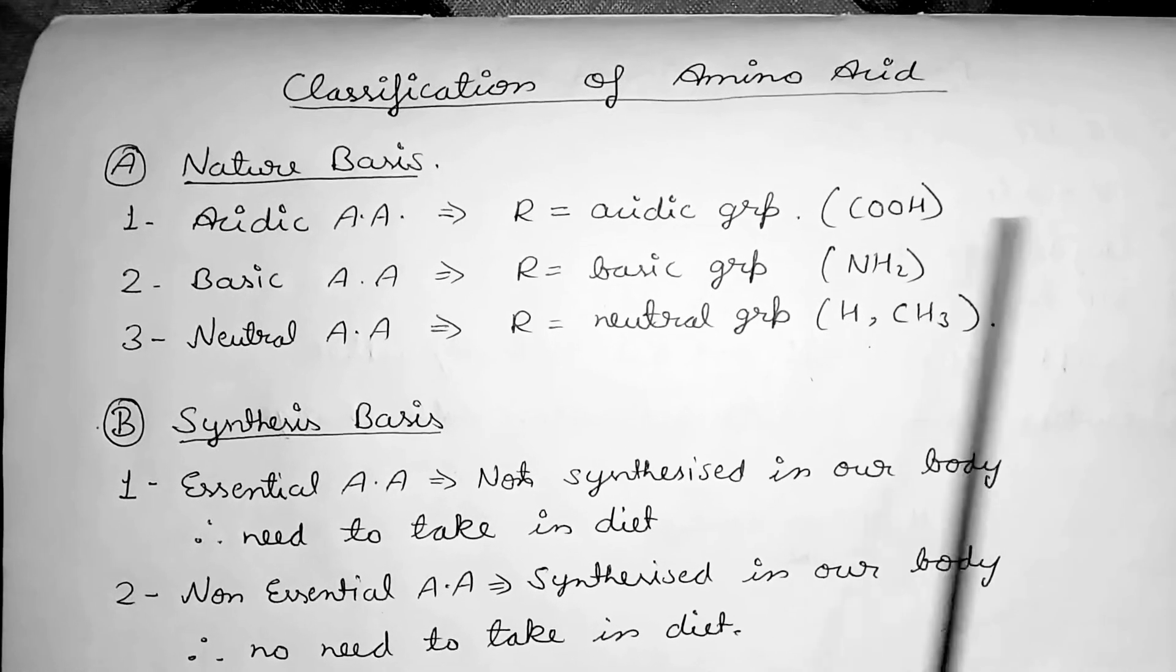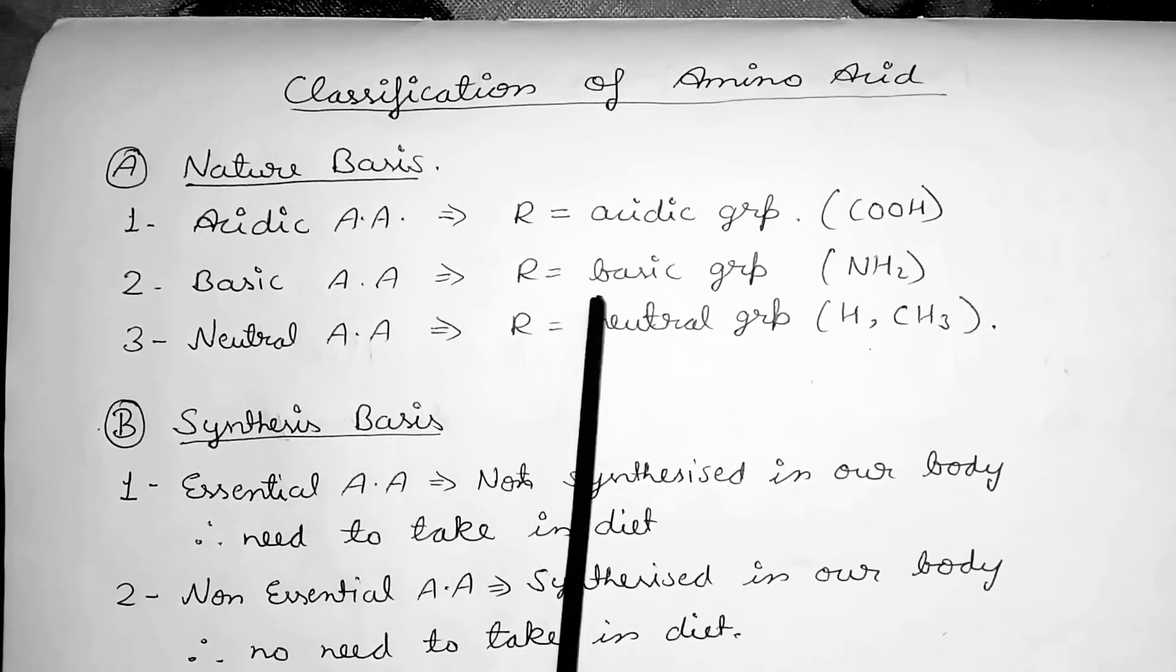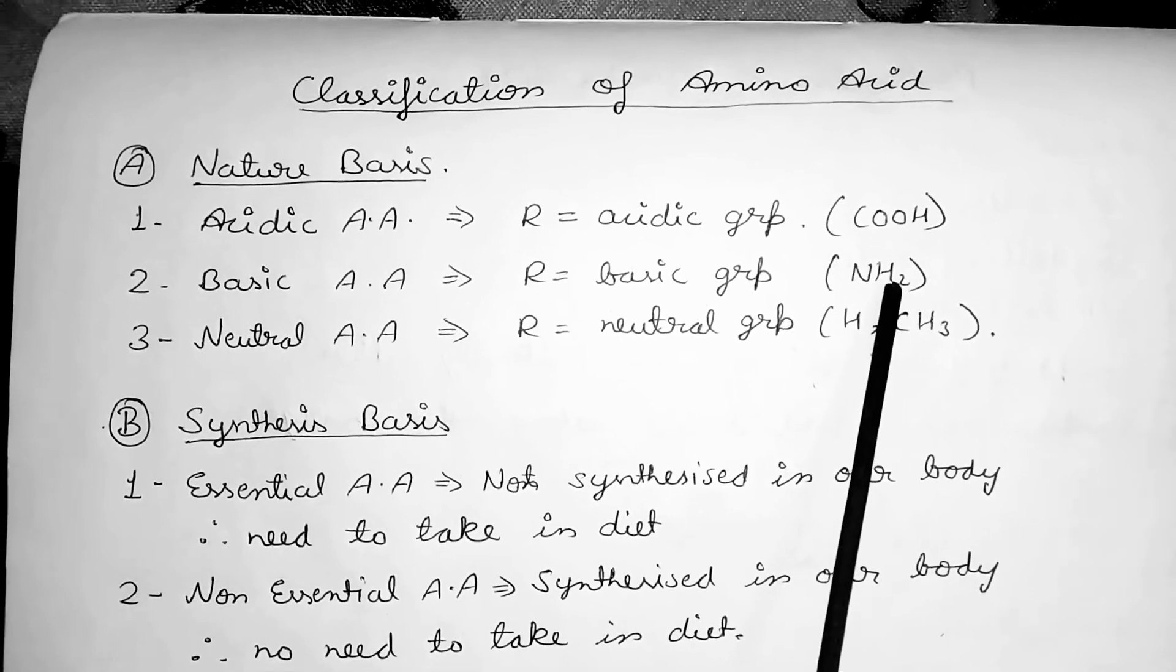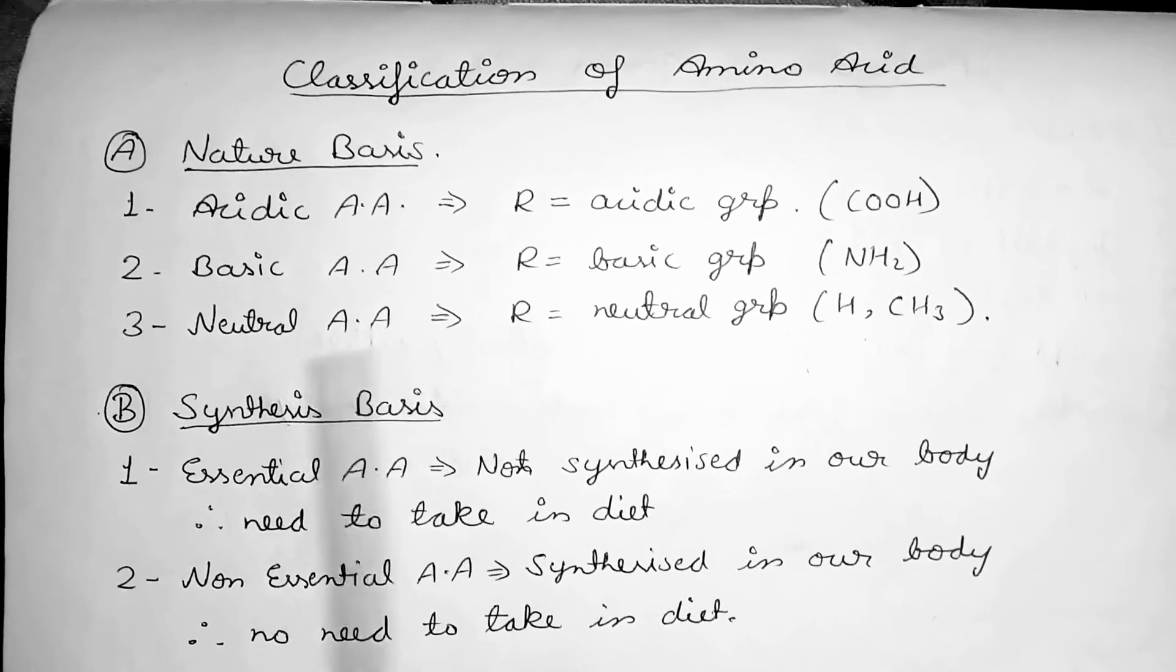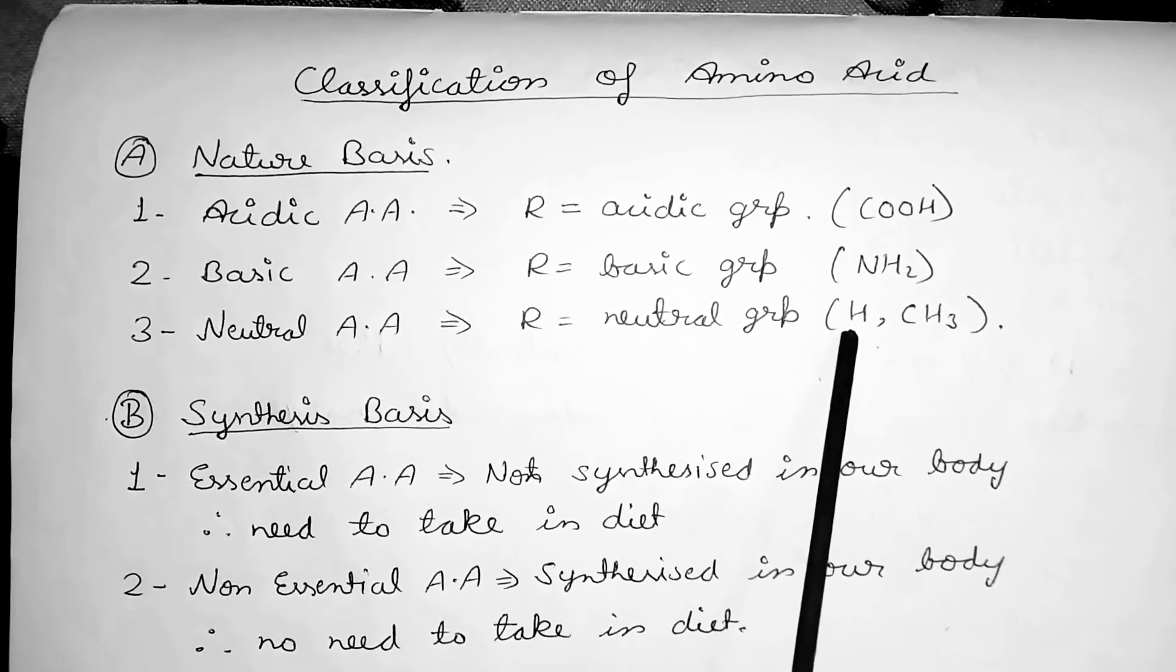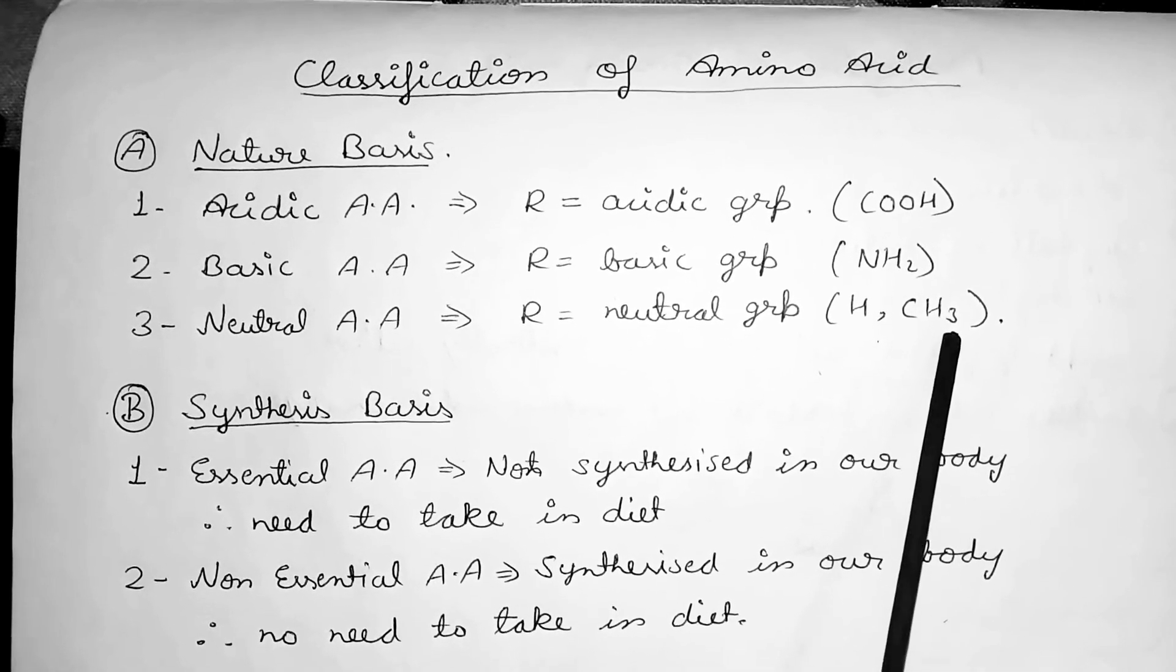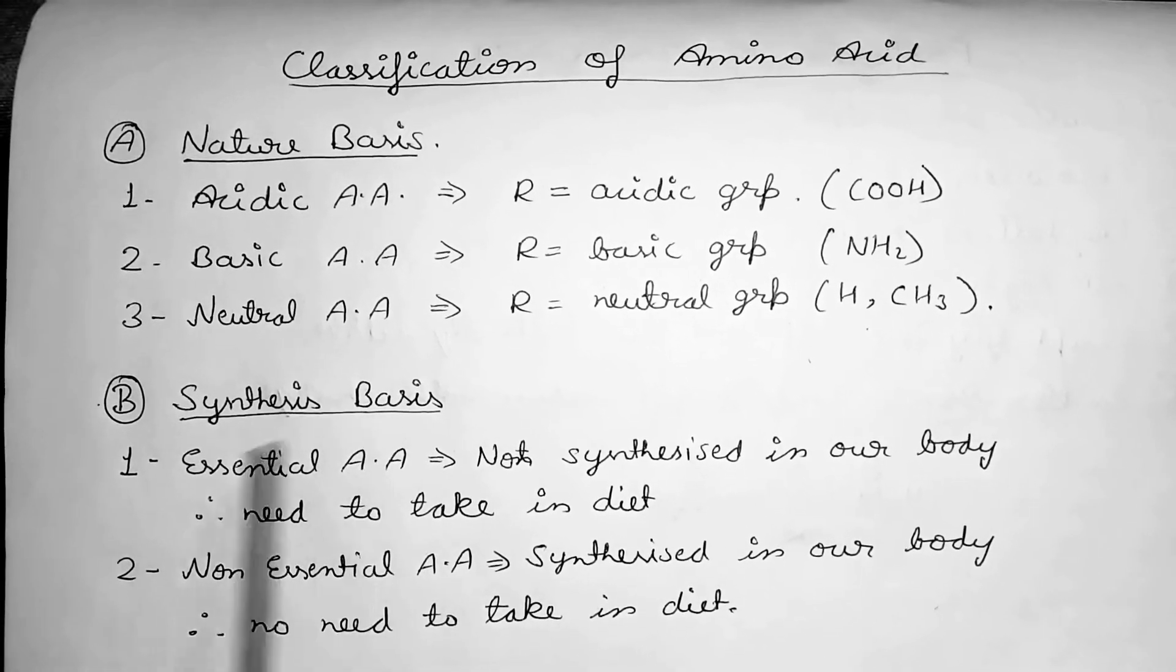group. The R group can be acidic. In basic amino acids, the R group is basic like NH3. In neutral amino acid, the R group is neutral like hydrogen or methane molecule (CH3). So this is for nature basis. And in case of synthesis basis there are